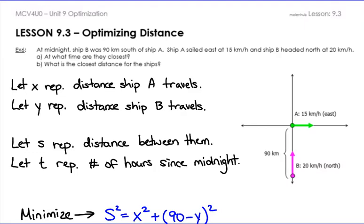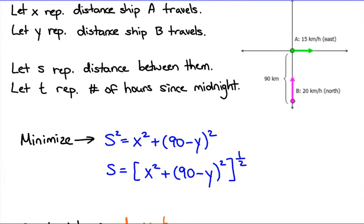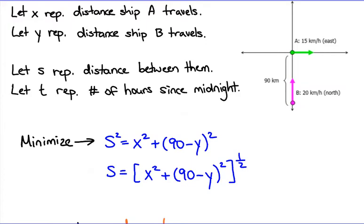I'm going to scroll down quickly and then we'll do these examples. You should start with some let statements because you're going to have a bunch of variables. Afterwards you identify whether you're minimizing or maximizing. Look at what they're trying to get you to optimize — is it area, volume, or distance? That's going to dictate what the formula should be, and finding this formula is actually the hardest part.